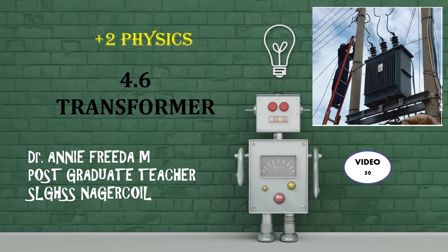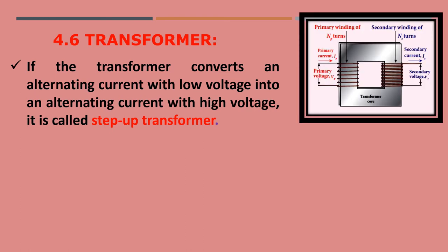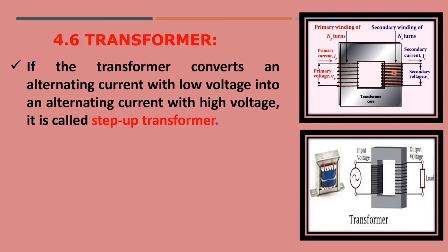Transformers are of two types. If the transformer converts an alternating current with low voltage into alternating current of high voltage, then it is called a step-up transformer. The number of turns in the primary coil is lesser than that of the secondary coil, so here the lower voltage is transformed into higher voltage.